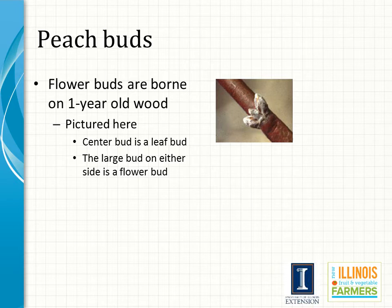Peach trees bear fruit laterally on wood that grew the previous year. Flower buds of the peach are plump and roundish; the leaf or shoot buds are small, narrow, and pointed. On vigorous shoots, flower buds at a given node may occur in numbers of one, two, or three. Where three buds are at a node, the usual arrangement is for the center bud to be a leaf bud while the outer buds are flower buds. On shorter growth and spurs, flower buds are often borne singly beside a leaf bud. On very vigorous shoots, buds may consist almost entirely of leaf buds.